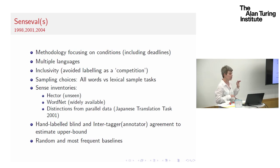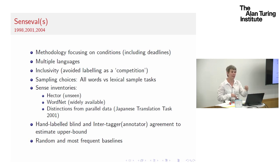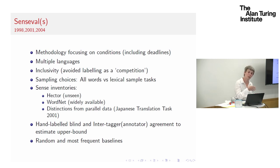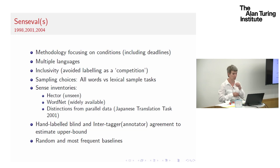At the start, the sense inventory they chose — Hector — was one none of us had been using, to avoid bias. But there were issues with licences, and since most of us were using WordNet, they had to provide a mapping between WordNet and Hector. A mapping introduces biases — it might do a disservice to your system, or it might actually help by pushing it more likely toward the most common sense, since more senses may be mapped to it.